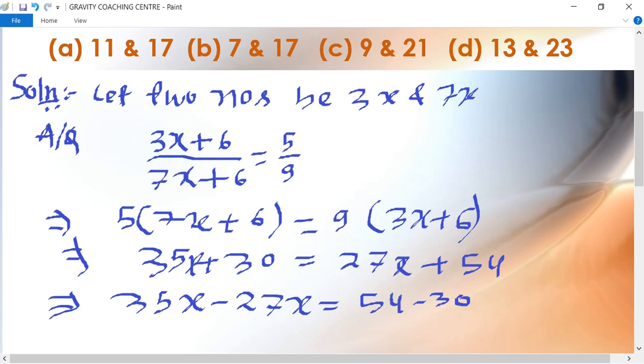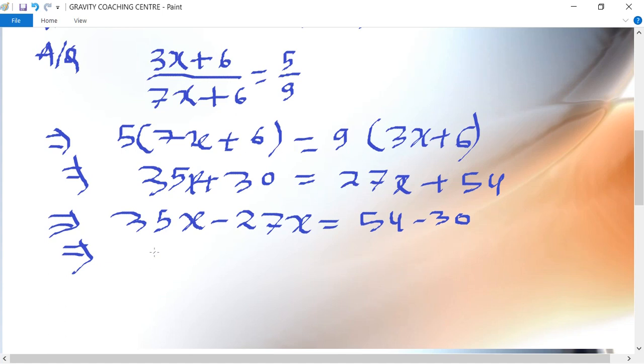This implies that 35x minus 27x equal to 54 minus 30, implies that 8x equal to 24. Therefore x equal to 24 upon 8, so x equal to 3.